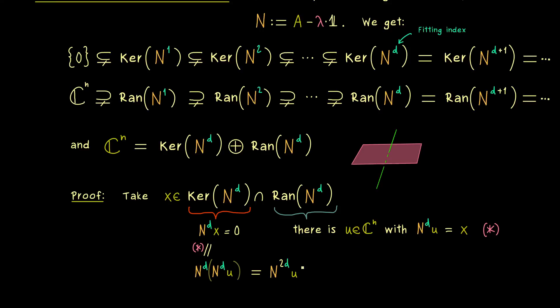So the conclusion is that our u here lies actually in the kernel of N to the power 2d. This is a nice result, because we know this index is higher than our fitting index, which means we can use that we have equalities on the right here.